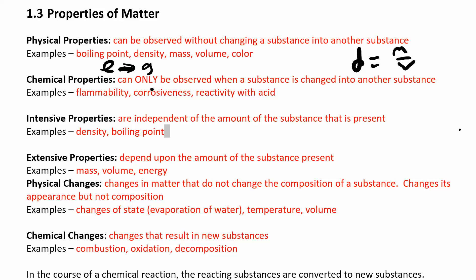Chemical properties are things you can only observe when you make a new substance — only when you change something into another substance. These are the ones that sound kind of dangerous: flammability, corrosiveness, does it react with an acid? Does it burst into flames? Does it corrode? Is it undergoing any kind of redox reaction or oxidation? Reactivity — there's a reaction going on for a chemical property.